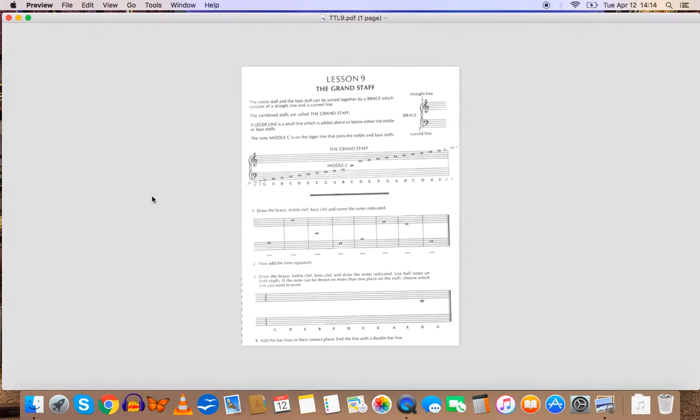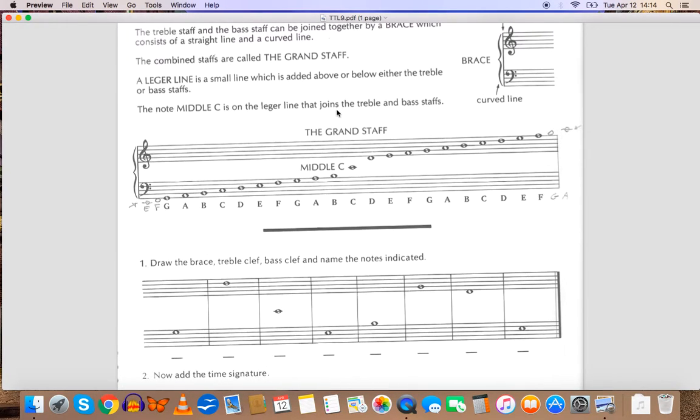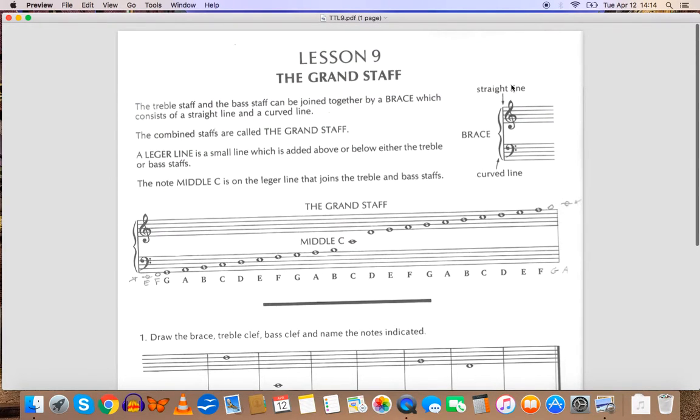So far you've learned about the treble clef and the bass clef. In the grand staff, we put them together. They're going to be joined together by a brace. As you can see right here, this is what a brace is. It consists of a straight line and a curved line. You're going to need to know because you're going to draw it a couple times in your practice.